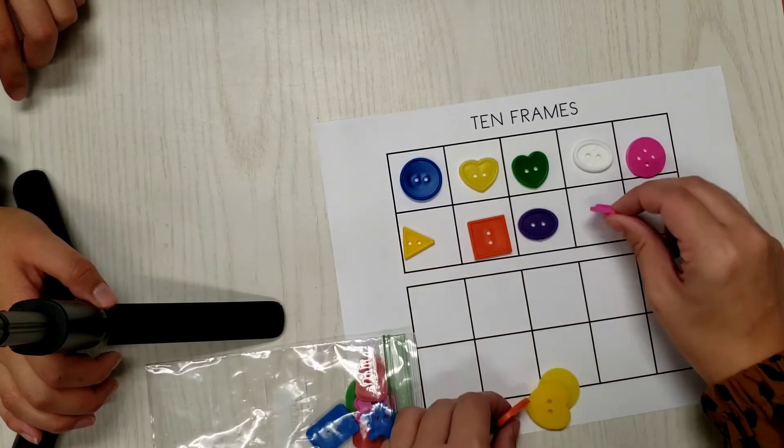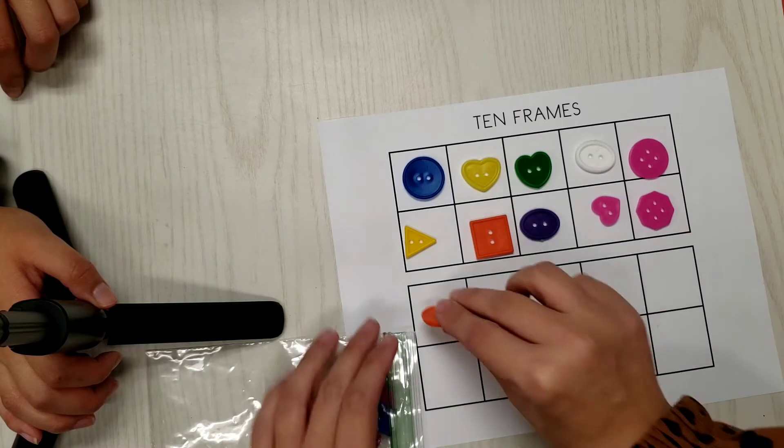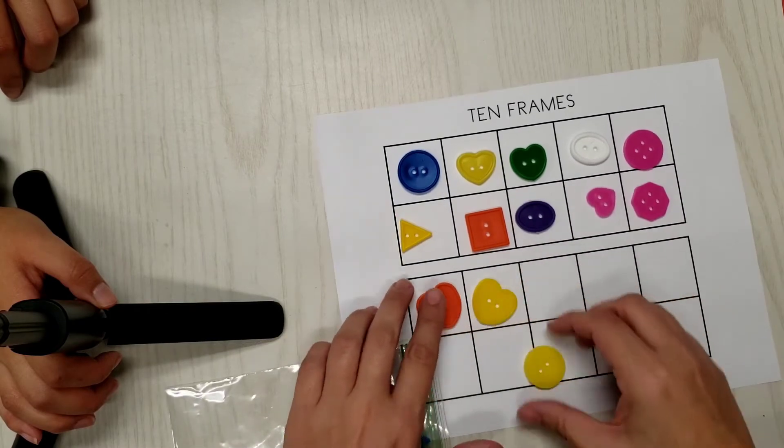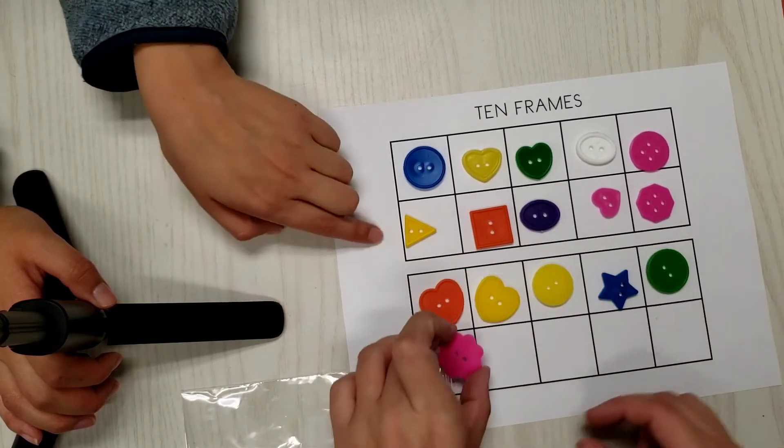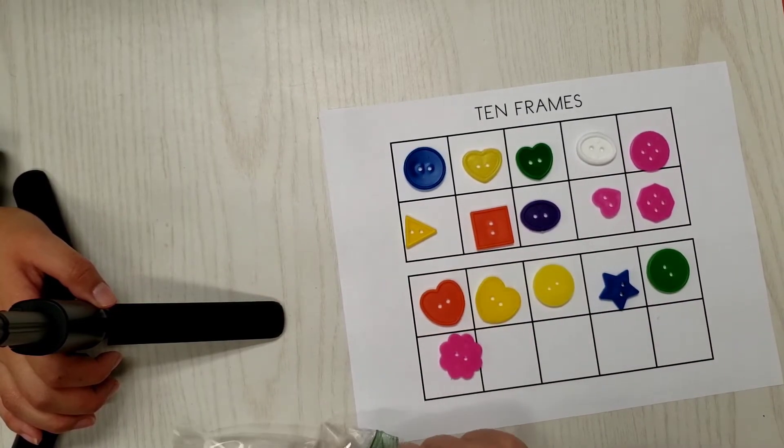So, they're going to fill both 10 frames, so they should have 20 buttons filling the frame. Y después van a hacer el otro, entonces, así van a tener 10 cuadros en cada sección, serían 20 botones en total.